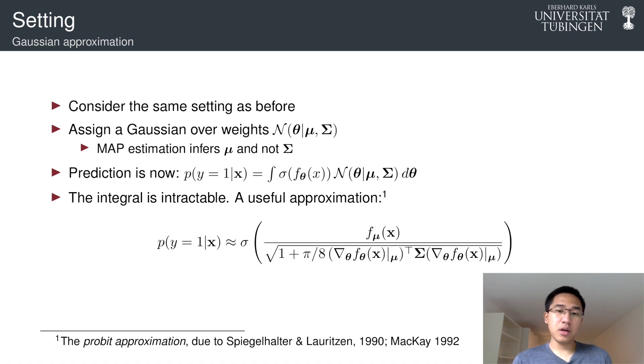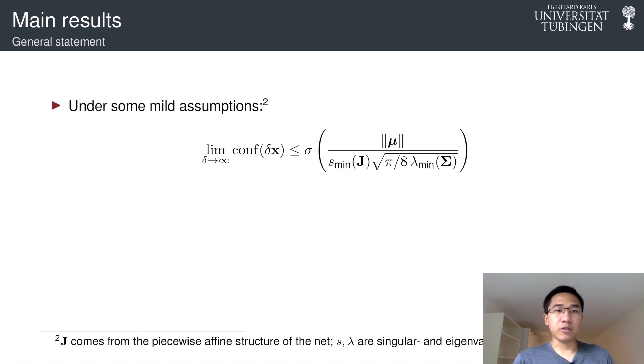which arises from the linearization of the network with respect to the parameters, and by approximating the logistic sigmoid function with another sigmoid function, which is the probit function.